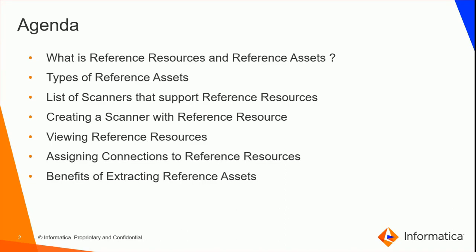The types of reference assets that can be seen in Enterprise Data Catalog are reference data sets, reference data elements, and reference data source. A reference data set refers to a collection of data objects included in a reference resource — examples include tables, views, synonyms, and public synonyms. A reference data element refers to any asset within a reference data set. For example, a column within a table or a view column within a view. Examples include columns, view columns, and fields.